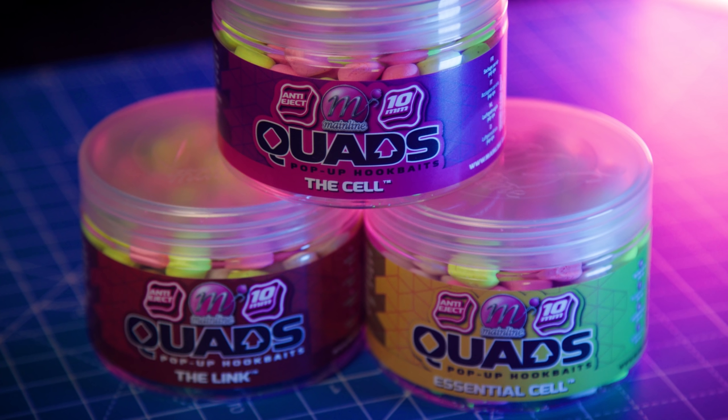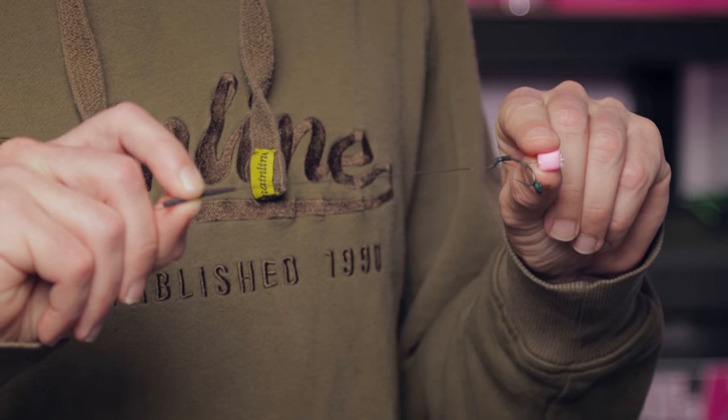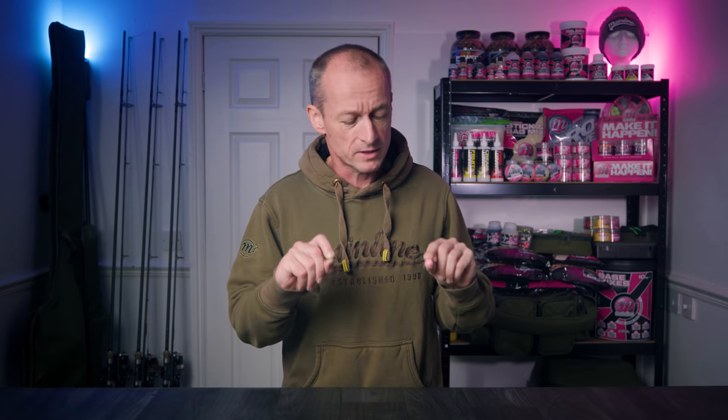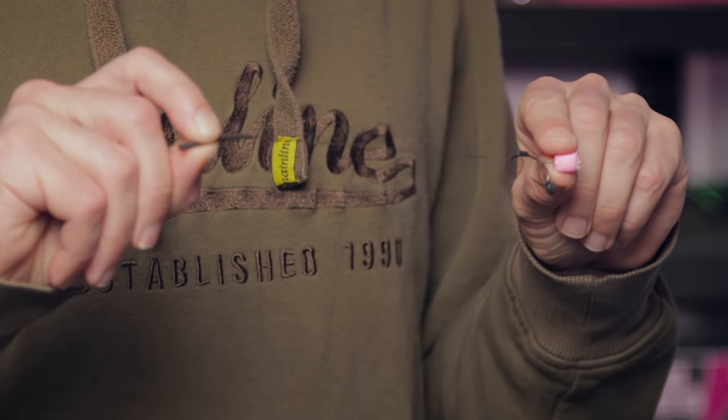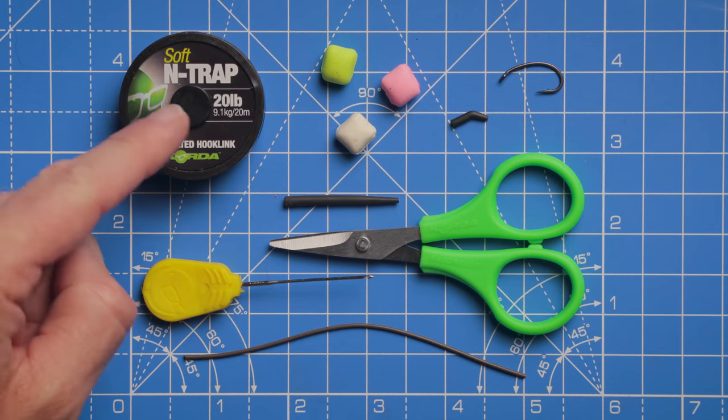In the last video we were taking a look at the new Quads, and while thinking about rigs to use with these hook baits, I remembered an old rig that most of you have probably never heard of - the shot on the hook rig. It's very unique in the way it presents the hook bait and how the hook sits close to the bottom in a different position to other rigs. We'll switch to the overhead cam, I'll show you how to tie it, and then there'll be some underwater shots so you can see exactly what I'm talking about.